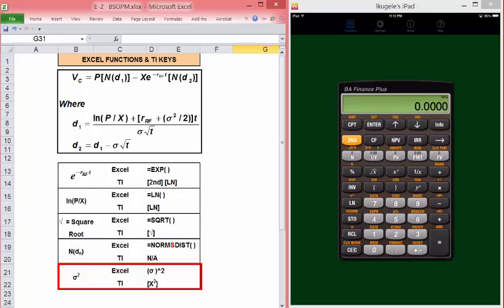In Excel, raising to a power uses the caret, which is the shift 6. In TI, there's a dedicated key above the right paren, x squared. With that introduction, let's look at our problem.